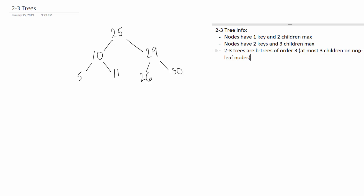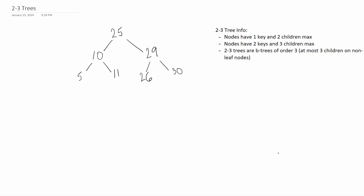So just to go over some basic rules of a 2-3-tree. Every single node — one of these little cells here — that's a node. When I talk about children, I mean these guys in relation to the parent node. So 29 would be a parent node to 26 and 30, just as an example. When I say key, I mean the value inside the node. So 29 itself would be the key for that node. This gets a little less confusing once you have multiple keys per node, and we'll get into that.